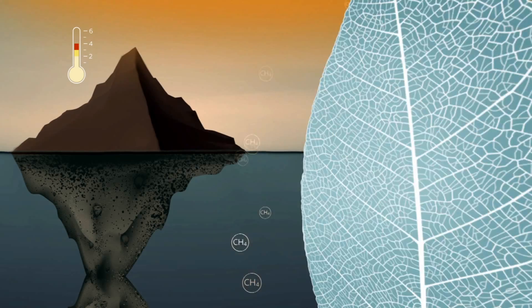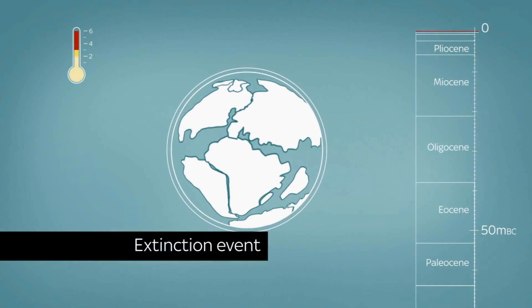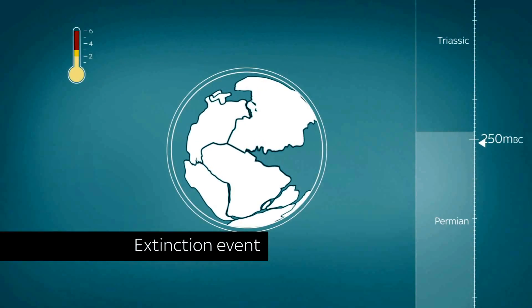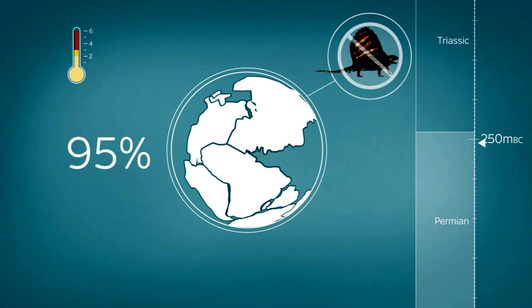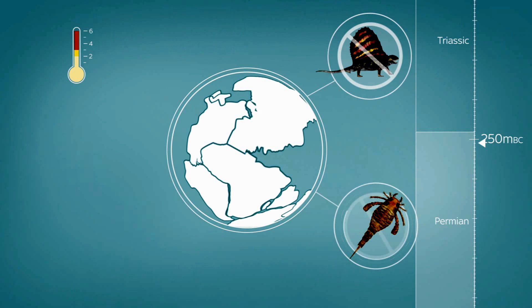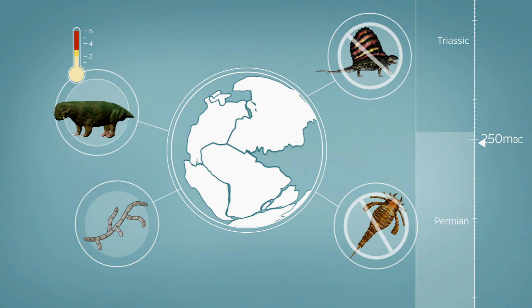To see what the world could look like at 6 degrees, we have to go back 251 million years. 95% of living species were wiped out. At sea, everything suffocated, and the only winners on land were fungi and the pig-like Lystrosaurus.